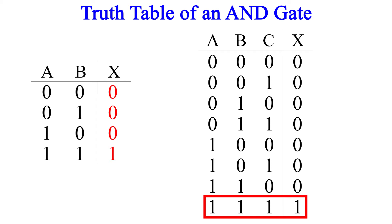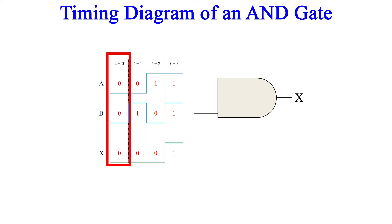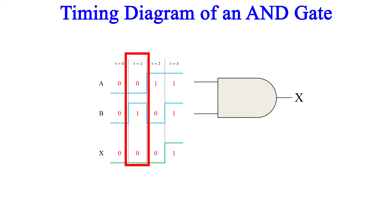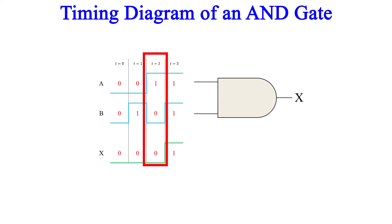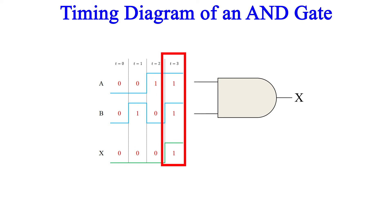Now let's move on to a timing diagram. Here we have the timing diagram of the AND gate. This is much the same as the truth table. At t equals 0, both inputs are low, and so the output is low. At t equals 1, input A is low and B is high. At t equals 2, A is high and B is low. And at t equals 3, both inputs A and B are high. You can see that the only place the output is high is at t equals 3.